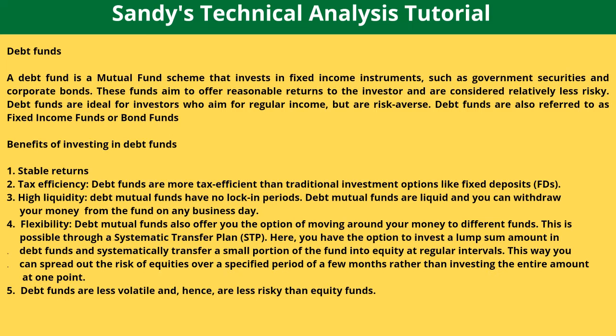This is possible through a systematic transfer plan or STP. Here you have the option to invest a lump sum amount in debt funds and systematically transfer a small portion of the fund into equity at regular intervals. This way you can spread out the risk of equities over a specified period of a few months, rather than investing the entire amount at one point.